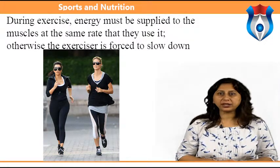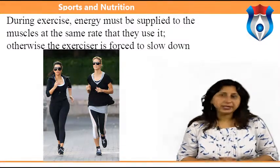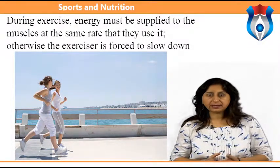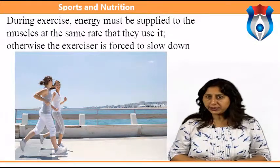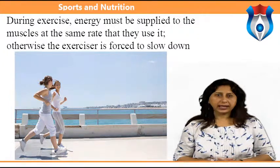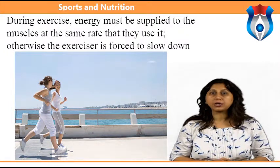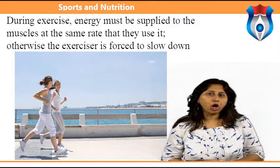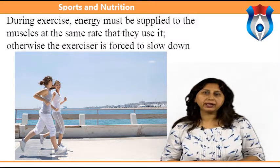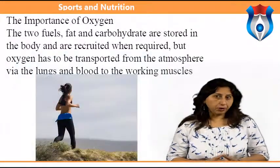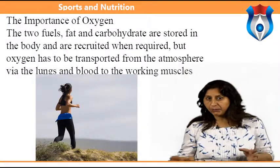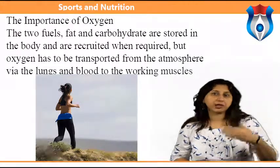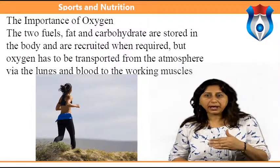The generating of energy occurs in the mitochondria — the micro power stations in the muscle cells. This occurs when either carbohydrate or fat is metabolized or burned to produce a usable form of energy called adenosine triphosphate, or ATP. ATP is the common energy source used in all cells of the body for all biological activities. Fat and carbohydrate are stored in the body and recruited when required, but oxygen must be transported from the atmosphere via the lungs and blood to the working muscles.